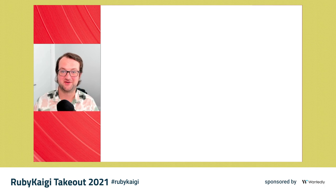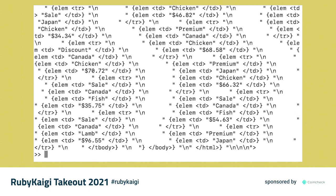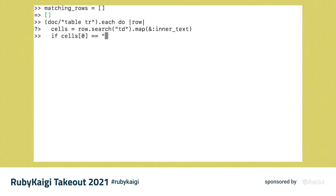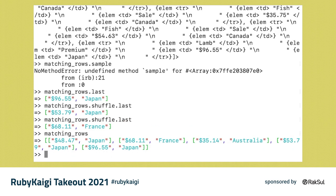Hpricot is required and it goes straight to business parsing an HTML file. I love this part of the API — you just call top-level Hpricot and pass in your HTML directly. We set up an empty array, and with our instance variable we can do a forward-slash table TR to parse it — a really elegant part of the API. We iterate through the output, take each row's inner text for the cells, and filter for premium lamb to find where they're from. And there we go: Japan, France, Australia, with prices.